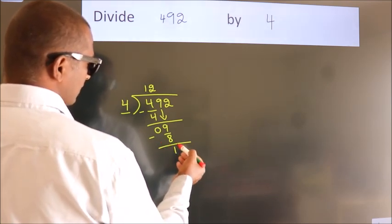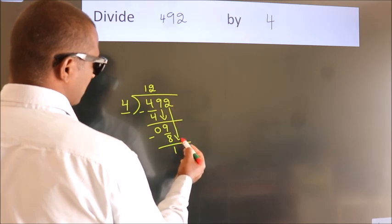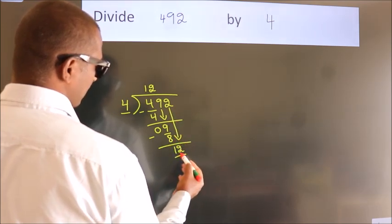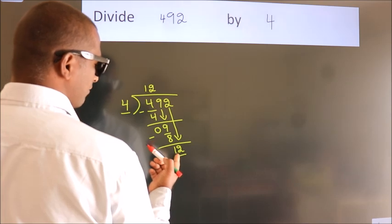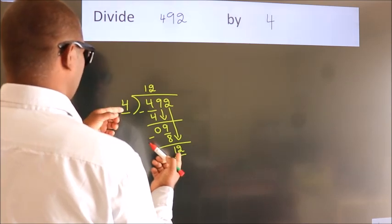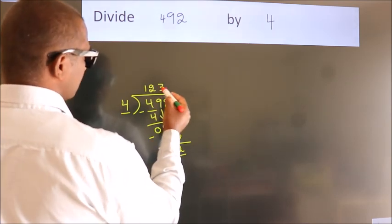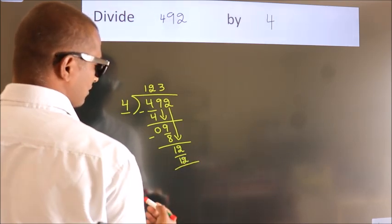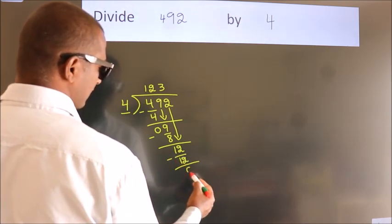After this, bring down the next number, so 2 down, so 12. When do we get 12? In the 4 times table, 4 times 3 is 12. Now, we subtract, we get 0.